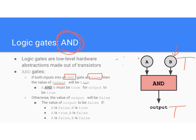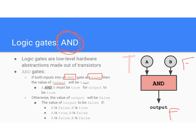On the other hand, if one or both of the values for A and B are false, an AND gate will output false. If A is false but B is true — false. If A is false and B is false — false. If A is true and B is false, an AND gate still returns false. The only way to make an AND gate return true is for both A and B to be true. You can kind of hear the AND in it.